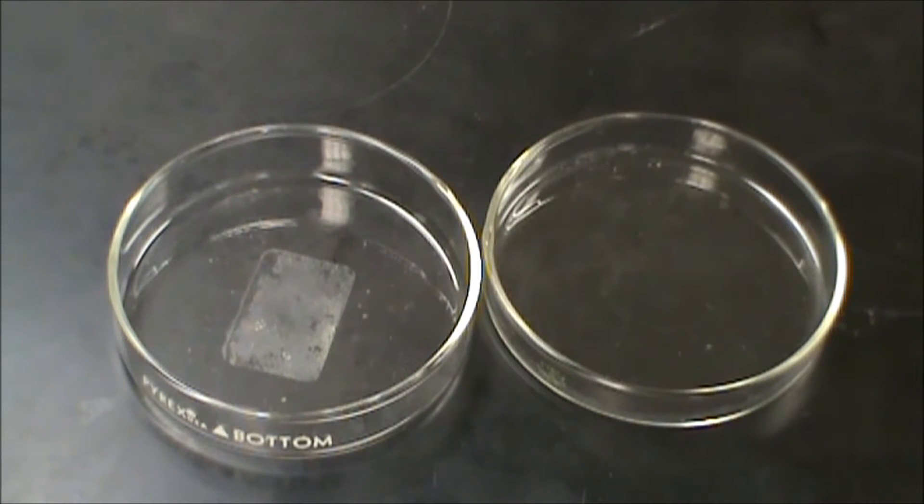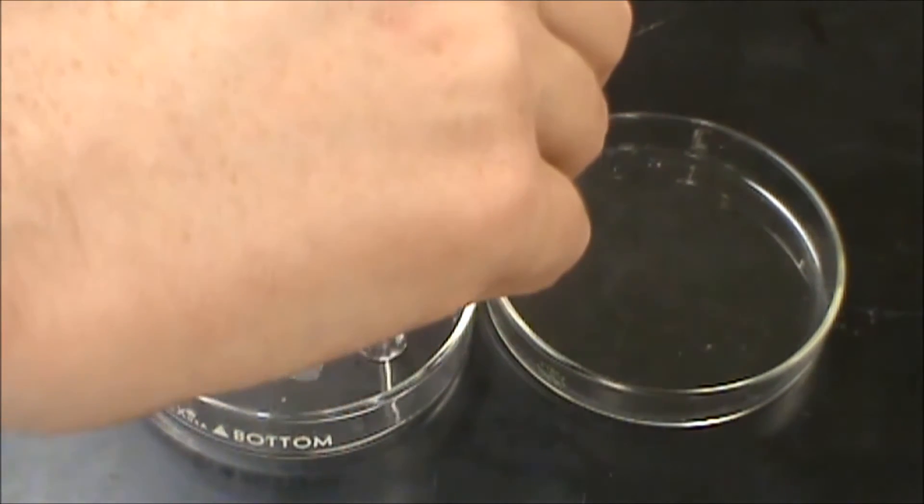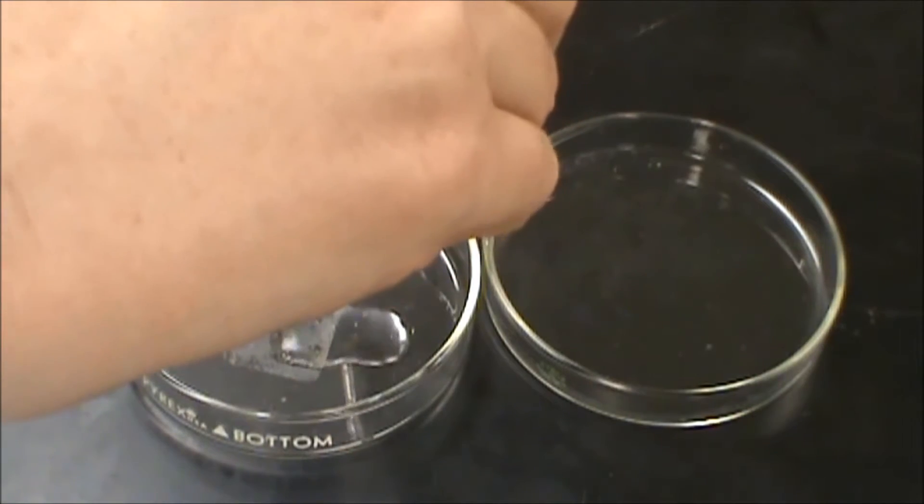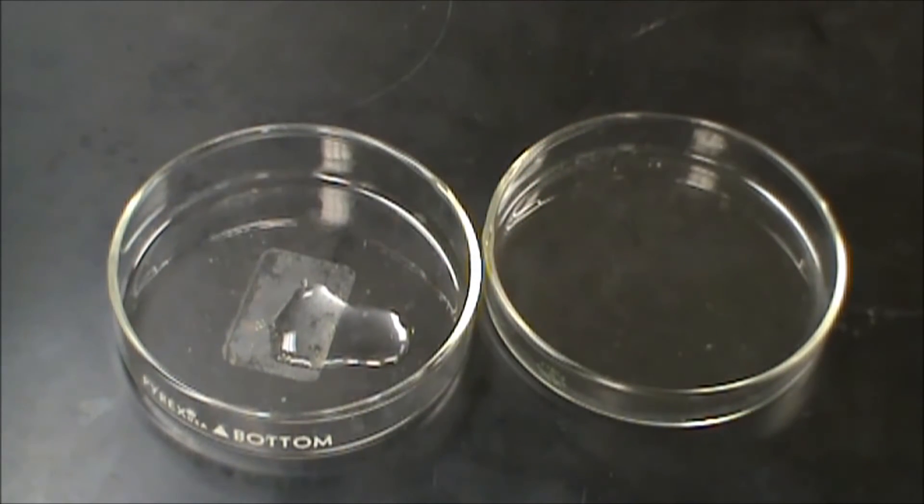We're going to do a little demonstration of amphoteric. What I'm going to do is take a milliliter of zinc nitrate, put it right there, and then I'm going to take another milliliter and put it over here. We're going to show how a compound can be both an acid and a base.